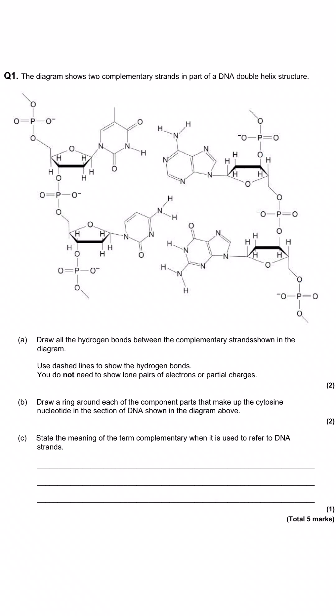In this first question, we're shown the picture of two complementary strands of the DNA double helix structure. And you can see this is one of the strands down here and this is another strand like so. And here are the bases in the middle through which those two strands are joined. And the first question tells us that we need to draw all of the hydrogen bonds between the complementary strands shown in this diagram. And they tell us that we should use dashed lines to show the hydrogen bonds, which means if we use solid lines, we'll get penalized. And then they tell us that we don't need to show any lone pairs on the atoms where the hydrogen bond begins or any of the partial charges of either of the atoms in the hydrogen bond.